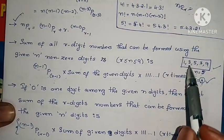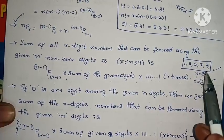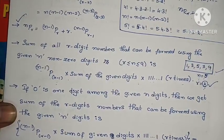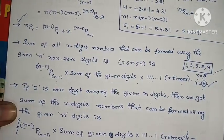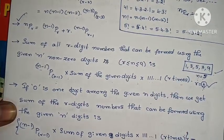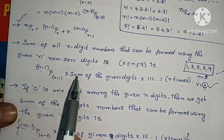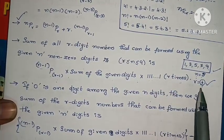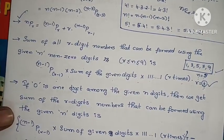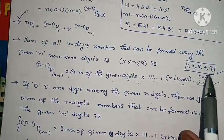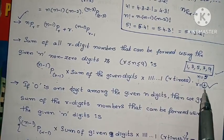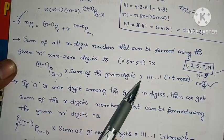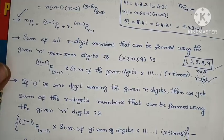Now consider the digits 1, 3, 5, 7, 9 — there are 5 numbers, so n equals 5. For the sum of all 4-digit numbers formed from these digits, r equals 4. The formula is: (n-1)P(r-1) into the sum of the given digits, into 111...1 (r times). R value is 4 and n value is 5. This is a 4-mark problem and is very important.